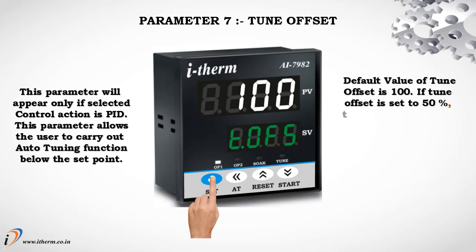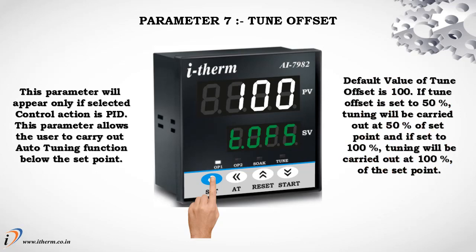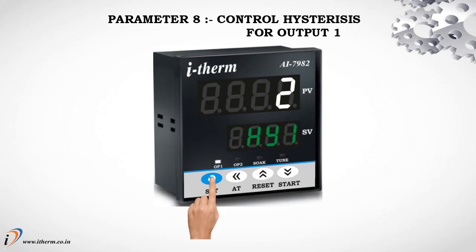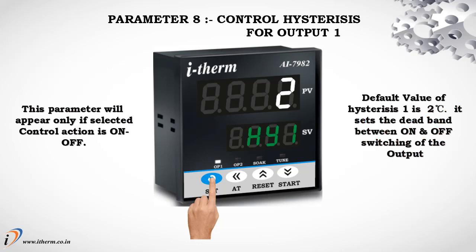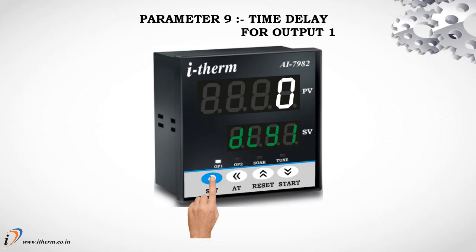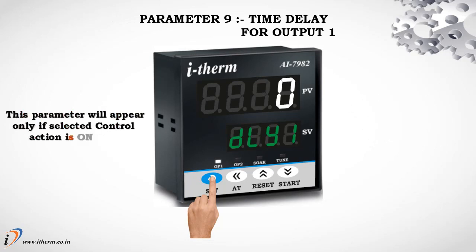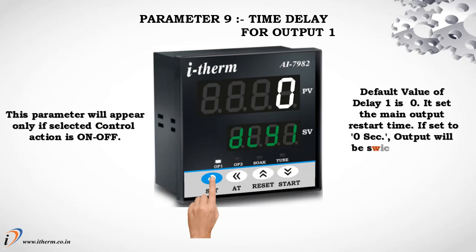Parameter 7: Tune offset. This parameter will appear only if selected control action is PID. This parameter allows the user to carry out auto-tuning function below the set point. Default value of tune offset is 100. If tune offset is set to 50%, tuning will be carried out at 50% of set point; if set to 100%, tuning will be carried out at 100% of the set point. Parameter 8: Control hysteresis for output 1. This parameter will appear only if selected control action is on-off. Default value of hysteresis is 2 degrees centigrade; it sets the dead band between on and off switching of the output. Parameter 9: Time delay for output 1. This parameter will appear only if selected control action is on-off. Default value of delay 1 is 0; it sets the main output restart time. If set to 0 seconds, output will be switched without delay.